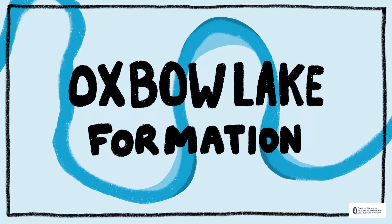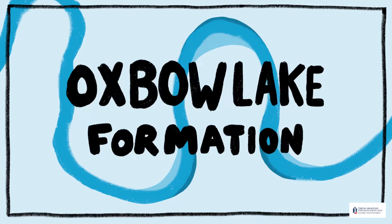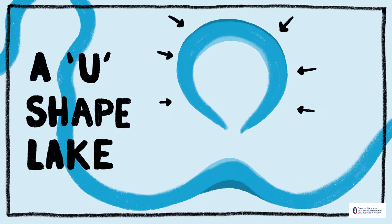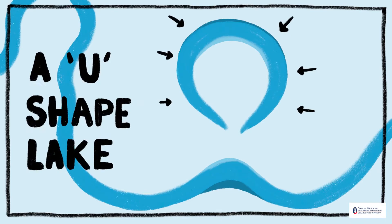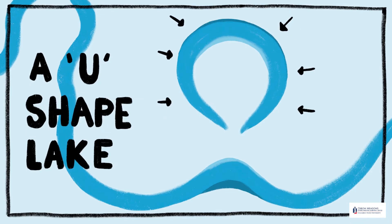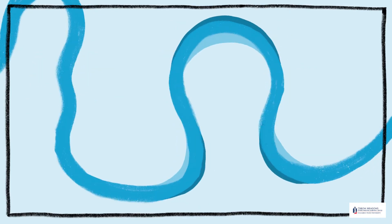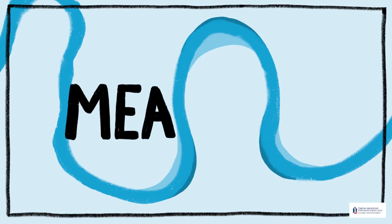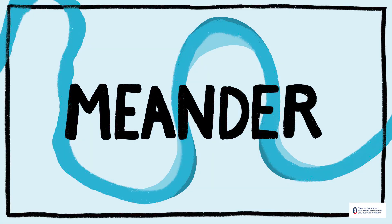Hey guys! Today we're going to be talking about an oxbow lake formation. An oxbow lake is a u-shaped lake that's formed when a river cuts off one of its large meanders. A meander is the winding curved shape of a river.